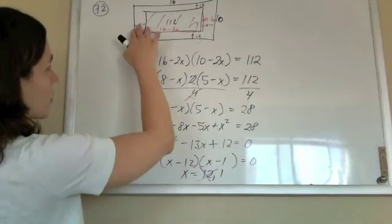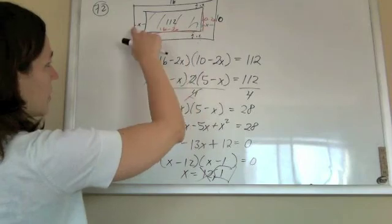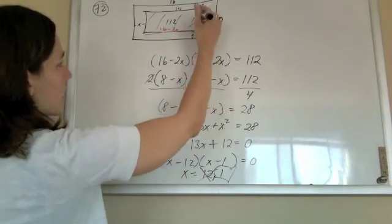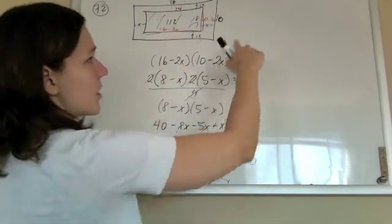The 1, though, should work just fine. We can check it if we like. If these x's were 1, then this thing here would be 14 long, and this guy here would be 8 long, and 14 times 8 hopefully equals 112.